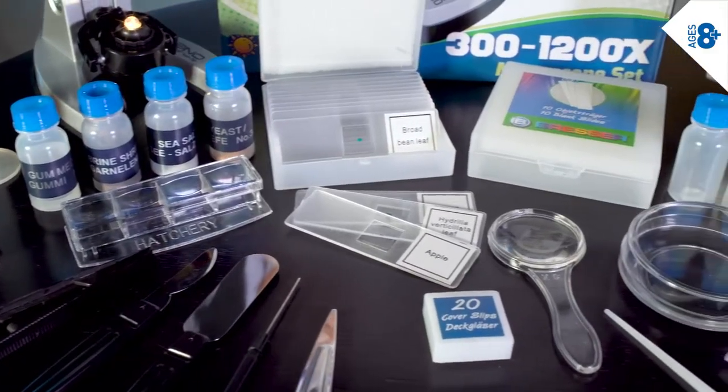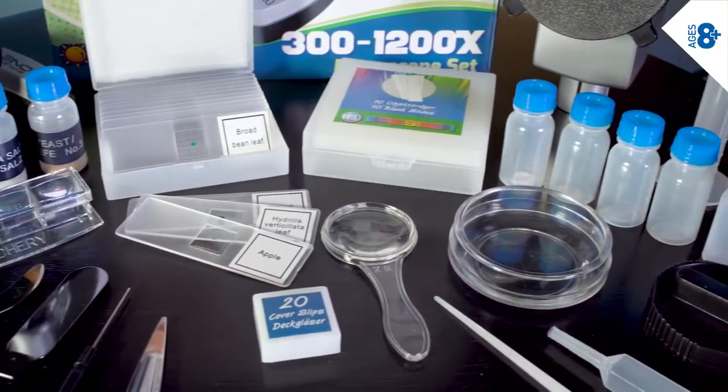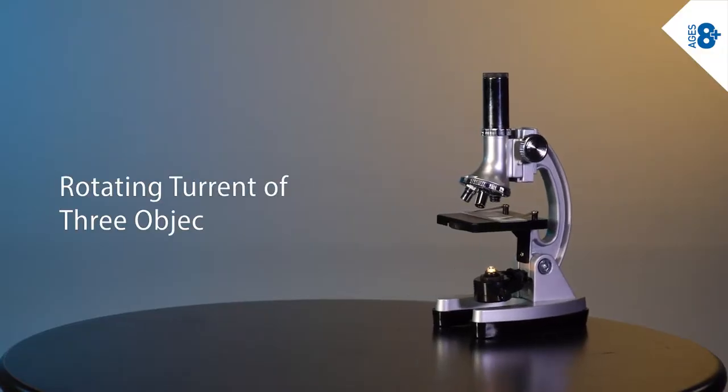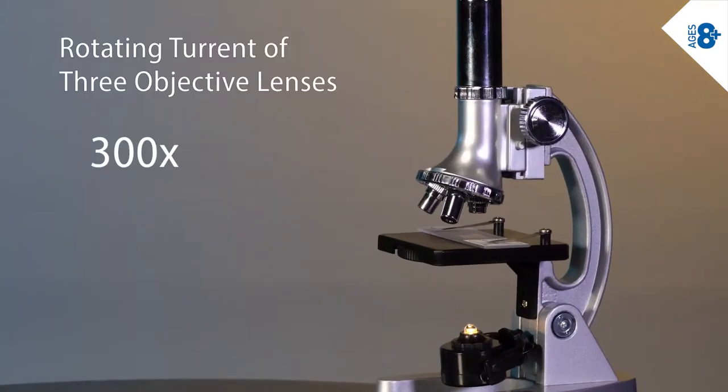Outfitted with a full range of collection tools, this beginner compound scope has quality optics that consist of a 40x magnification eyepiece and a rotating turret of three objective lenses with 300x, 600x magnification.